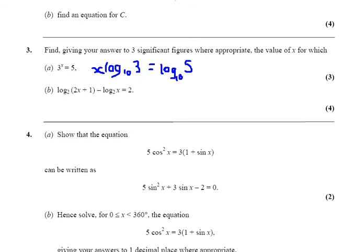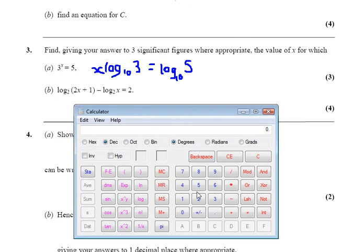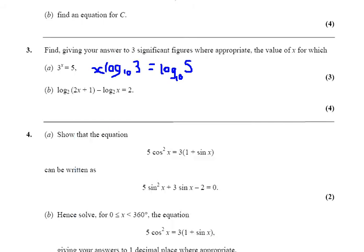Let's see what that is. Log of 5 divided by log of 3 equals 1.46. Two, three significant figures. 1.46.